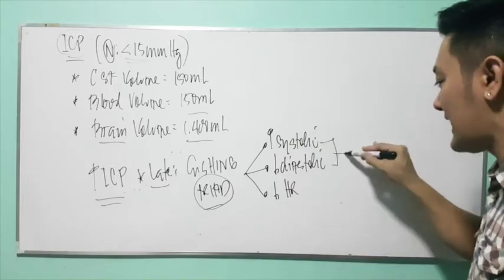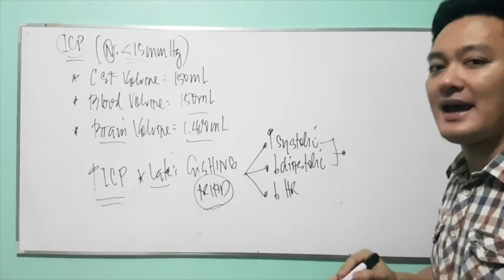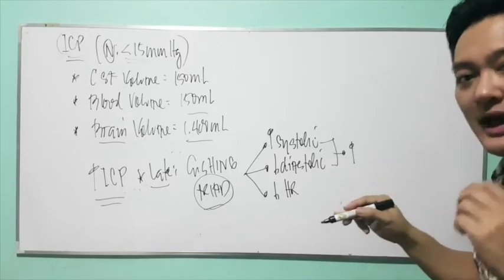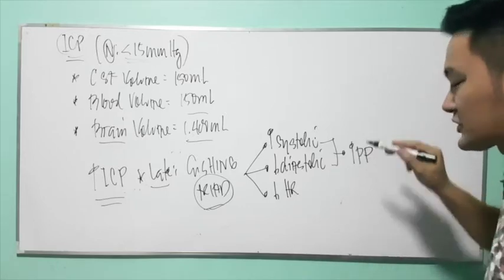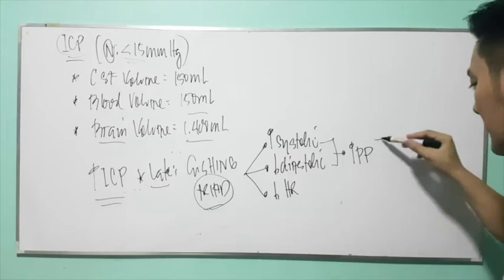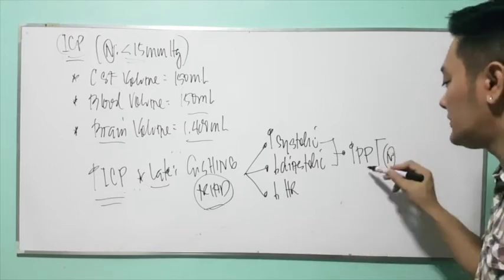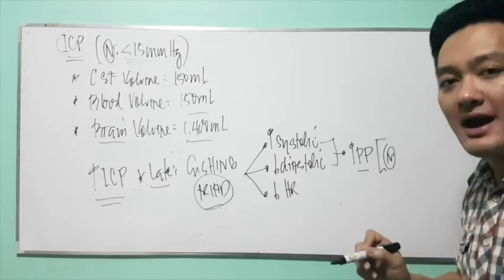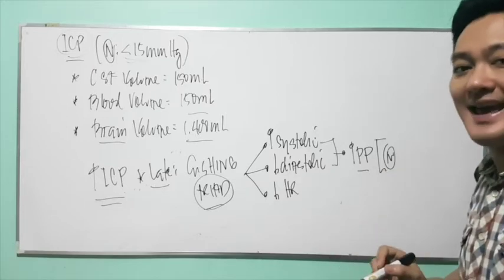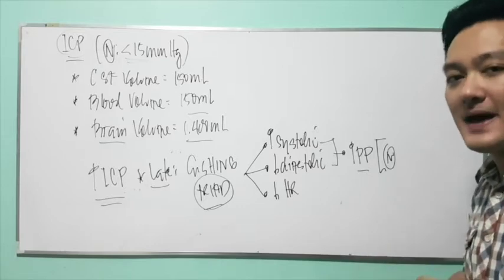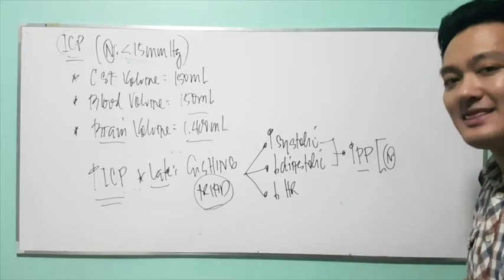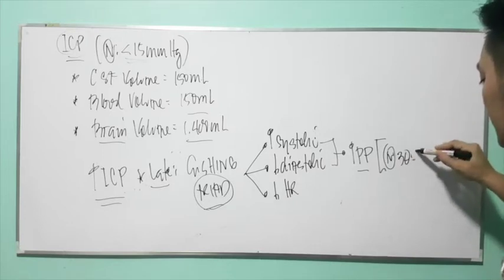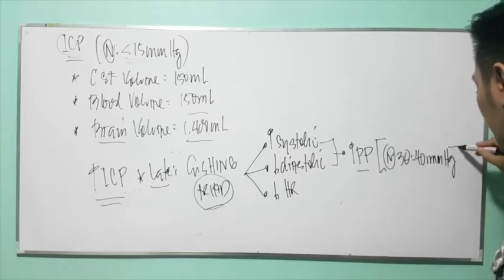When there is an increase in systolic and a decrease in diastolic pressure, there will be a widening — or increase — in the pulse pressure. The normal pulse pressure ranges from 30 to 40 millimeters of mercury. To calculate pulse pressure, you subtract diastolic from systolic; the difference is the pulse pressure.